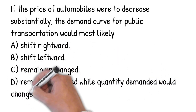A change in exogenous variables will shift the demand curve. When the price of automobiles decreases, the demand for automobiles will increase. Because automobiles and public transportation are substitutes, the demand for public transportation will decrease for any given level of price, which means it will shift to the left.